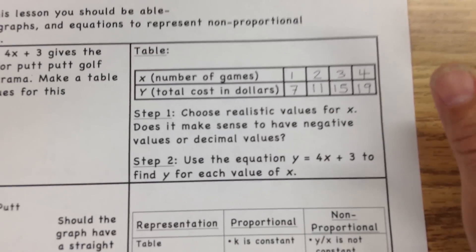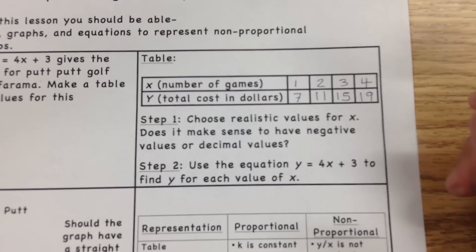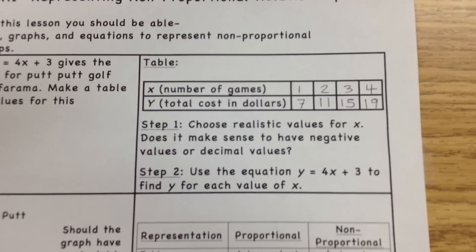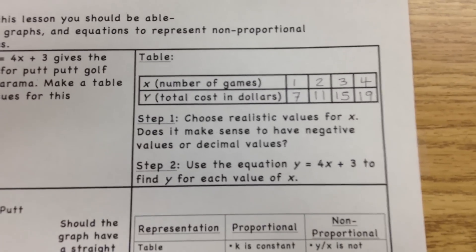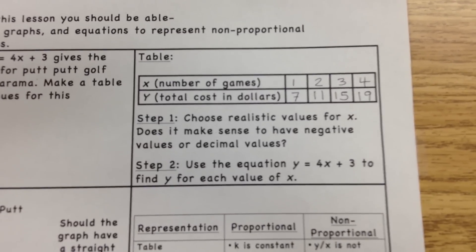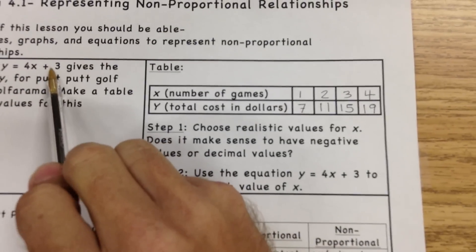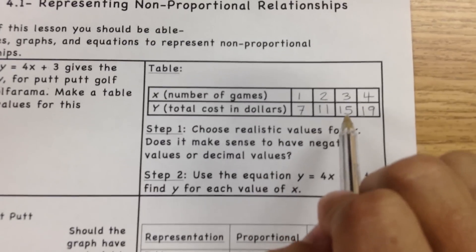So now we've created a table or chart for the line that we're going to graph. Now before we move on, let's talk about why this line is non-proportional. Other than the fact that it says plus 3, by what we're going to do next, you're going to be able to see this.